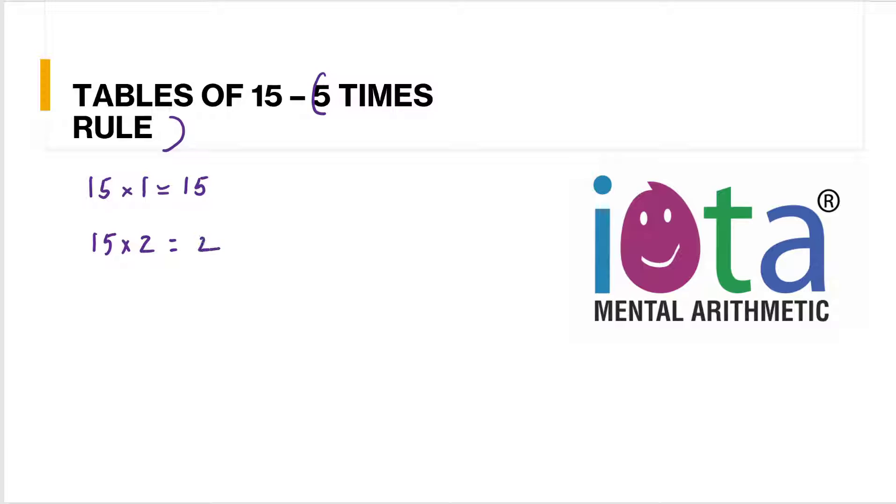15 twos are - you do two times five, that will be 10. So you write 2 and carry, that will be 30. Then five times three, you write 3, so you get 30. Then if you multiply by five, five times that will be 15, so that's 45. Then 15 into 4, four times five will be 20, so 60.